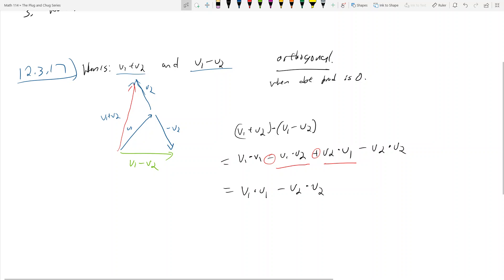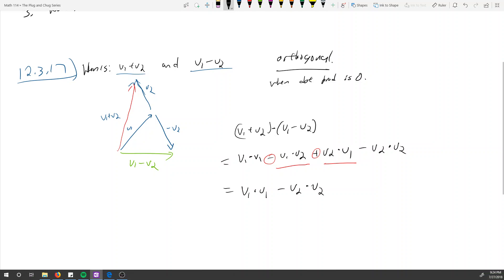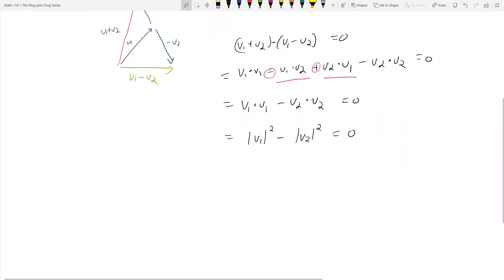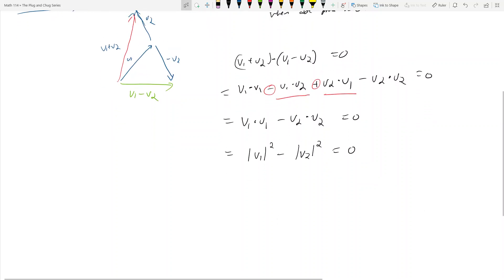Going back to the properties of the dot product, we see that V1 dot V1 is the magnitude of V1 squared, and that's property number four. V2 dot V2 is going to be V2 squared. We want this dot product to equal zero, so the magnitude of V1 squared minus the magnitude of V2 squared equals zero. We see that magnitude of V1 squared equals magnitude of V2 squared, and taking the square root of both sides, the magnitude of V1 equals the magnitude of V2.